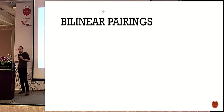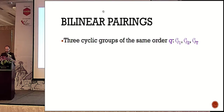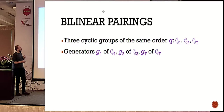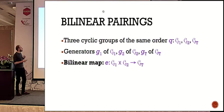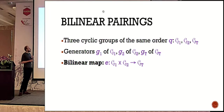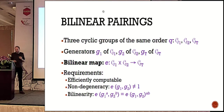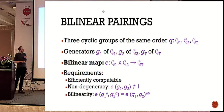Let me tell you something about bilinear pairings. We have three groups of the same order, denoted G1, G2, and GT, with known generators. We have a bilinear map — a function from G1 × G2 to GT — and the requirements are that it is efficiently computable, non-degenerate, and of course bilinear.